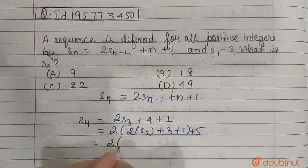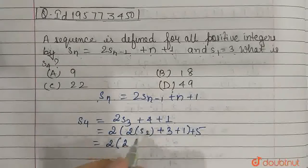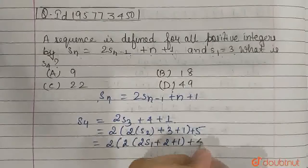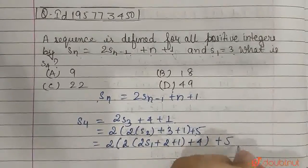Now we can also write s2 in terms of s1. So 2 times s1 plus 2 plus 1 plus 4, and here plus 5.